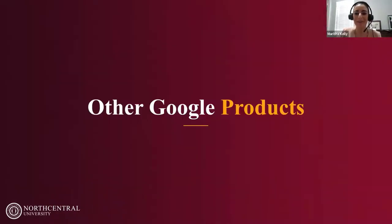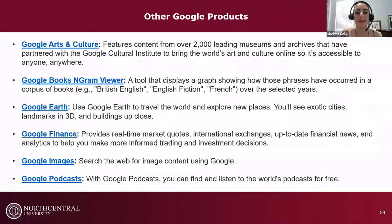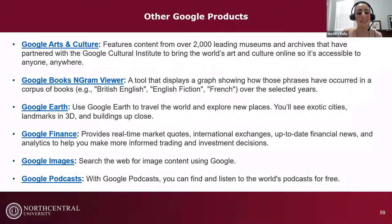There are other Google products we haven't had time to review today, all linked in our LibGuide. Notably, Google Arts and Culture is a good resource for searching archives and historical organizations like museums when looking for primary source documents. Google Images is useful if you're searching for an image and need to check permissions for its use.